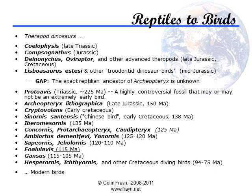Lineages that creationists often bring up as suffering from gaps are those of the evolution of birds, horses and whales. I've included a fairly thorough, though obviously abridged, version of the evolutionary history of these groups of animals in the slides. The point to remember is that the sequence is in fact extremely complete for all three of these groups, and in fact for pretty much any major modern animal group that you could name. So let's start with birds.